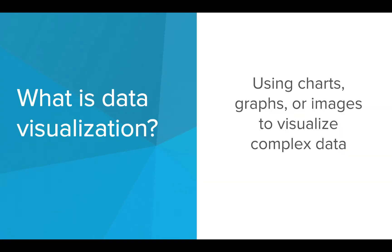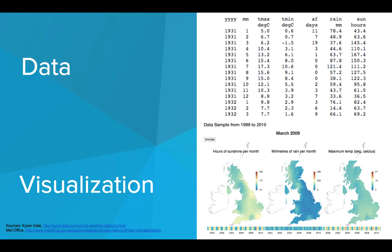So what is data visualization? It's when you use graphs, charts, and images that help you visualize complex data. Here's an example. On the top is the raw data collected about temperature, rainfall, and sunlight in Great Britain. It's kind of hard to pull any useful information from these numbers, right? On the bottom, the information has been presented in a way that makes it much less difficult to make sense of the data. You can easily see the location since a map is used, and the colors represent the amount of rain or sunshine.